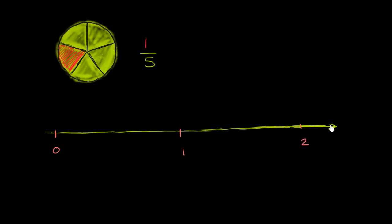And of course we could keep going if we had more space — 3, 4, and on and on. What I want to do, instead of taking a circle and dividing it into five equal sections, I want to take the section of our number line between 0 and 1 and divide it into five equal sections. So: 1, 2, 3, 4, 5. That looks pretty good.